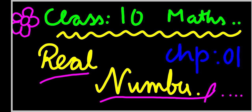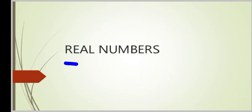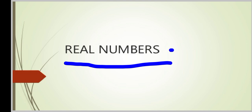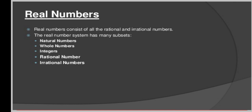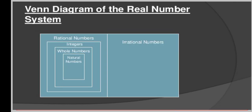The Fundamental Theorem of Arithmetic tells us about expressing positive integers as the product of prime integers and many other things. So basically, real numbers are the numbers which consist of all rational numbers as well as irrational numbers. There are many subsets: natural numbers, whole numbers, integers, rational numbers, and irrational numbers. Here is a Venn diagram of real numbers showing it is a constituent of rational numbers, integers, whole numbers, natural numbers, and irrational numbers.